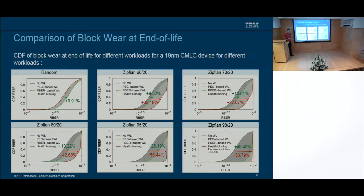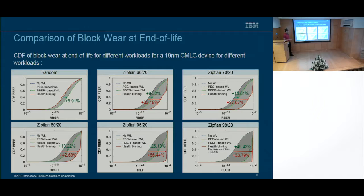With a uniform random workload, the best choice is always to take your healthiest block. Health binning, when relocating data, makes that data colder and tries to place colder data on less good blocks — so it's not performing as well there. But as soon as your workload has just a little skew — ranging from 60/20 up to 95/20 — health binning quickly outperforms all other schemes and gives tremendous improvements in endurance. Also interesting: program-erase cycle-based wear leveling doesn't give much benefit over no wear leveling at all.